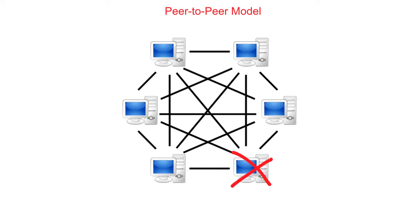This has led to peer-to-peer systems being very popular for sharing music and other files online. This, of course, has led to its own issues, not least mass piracy of content such as film, software, and music. These issues are looked at in more detail in our videos on the legal, ethical and moral issues of technology.